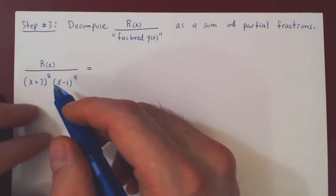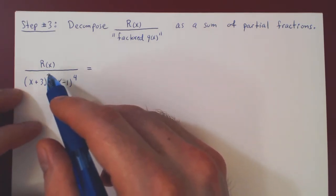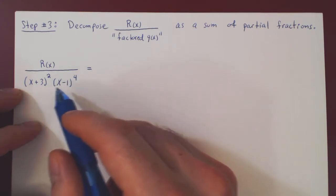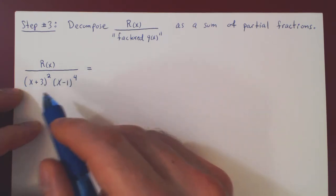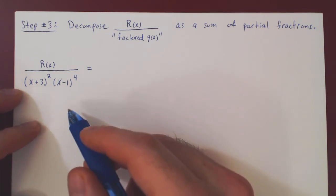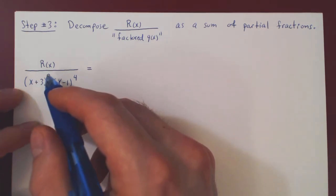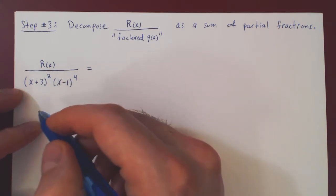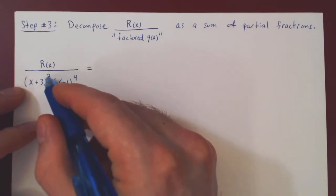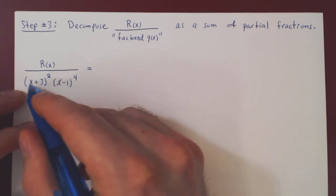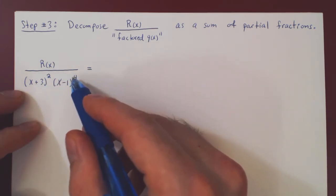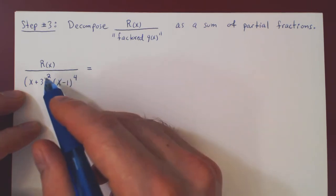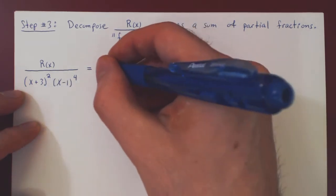We have two factors — ignoring the exponents for now. Both factors are linear: x plus 3 and x minus 1. Because we have a power of 2 on x plus 3, two partial fractions will come from this term. And because we have a power of 4 on x minus 1, four partial fractions will come from that term, for a total of 2 plus 4 equals 6 partial fractions.